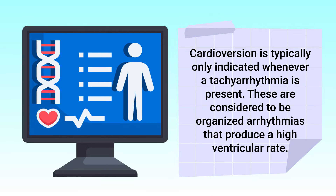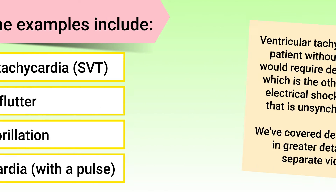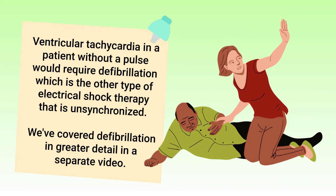Cardioversion is typically only indicated whenever a tachyarrhythmia is present. These are considered to be organized arrhythmias that produce a high ventricular rate. Some examples include supraventricular tachycardia, atrial flutter, atrial fibrillation, and ventricular tachycardia with a pulse. Ventricular tachycardia in a patient without a pulse would require defibrillation, which is the other type of electrical shock therapy and is unsynchronized.